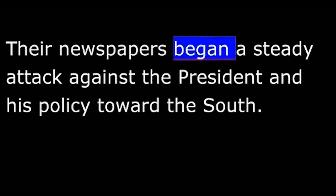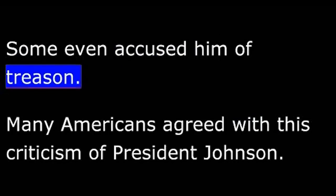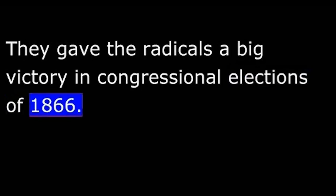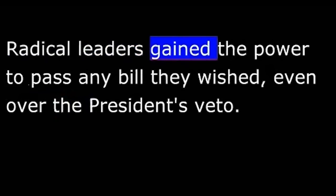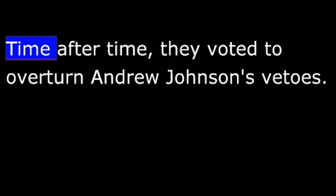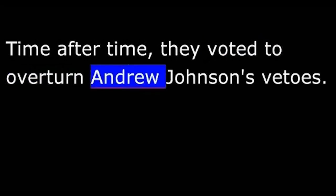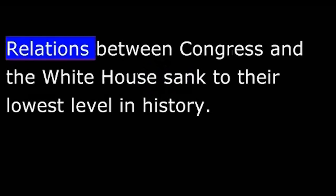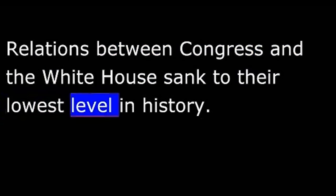These defeats made the radicals even more angry. Their newspapers began a steady attack against the President and his policy toward the South. Some even accused him of treason. Many Americans agreed with this criticism of President Johnson. They gave the radicals a big victory in the congressional elections of 1866. Radical leaders gained the power to pass any bill they wished, even over the President's veto. And they wasted no time doing just that — time after time, they voted to overturn Andrew Johnson's vetoes. The atmosphere in Washington became very tense. Relations between Congress and the White House sank to their lowest level in history.